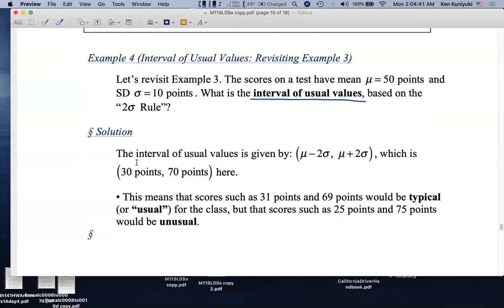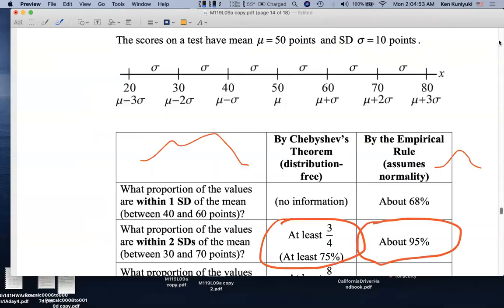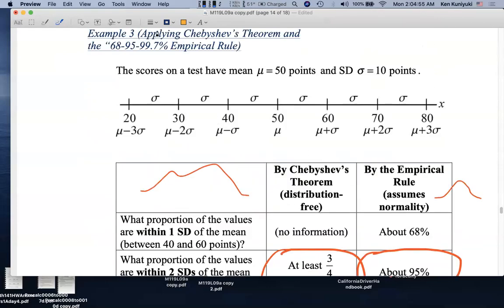The interval of usual values is given by the interval from mu minus 2sigma to mu plus 2sigma, which would be from 30 points to 70 points. Remember, look back at the number line here. The mean, mu, is at 50 points. The standard deviation is at 10 points.